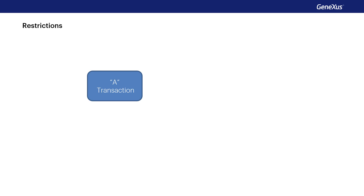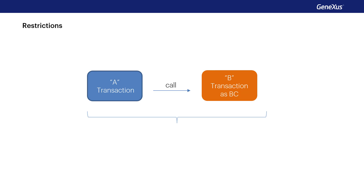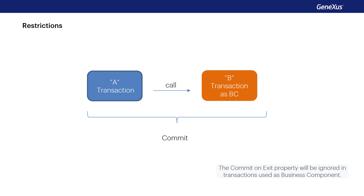If you need to execute operations through two different transactions and you want to form a single LUW between them, the solution is to execute them using the business component concept, including the commit command after executing the operations associated with both transactions. It should be noted that the Commit on Exit property will be ignored in transactions used as business components.